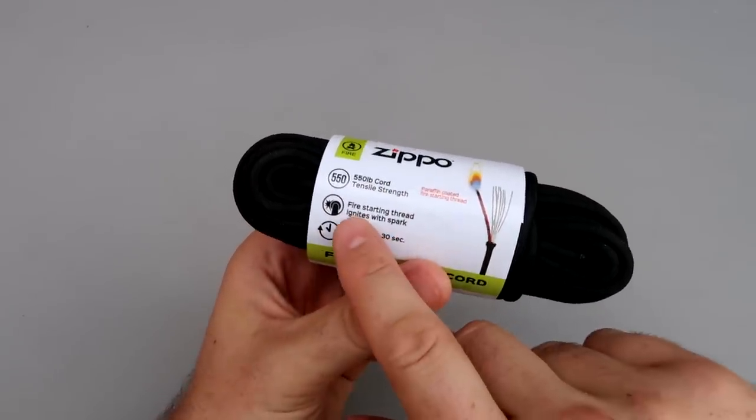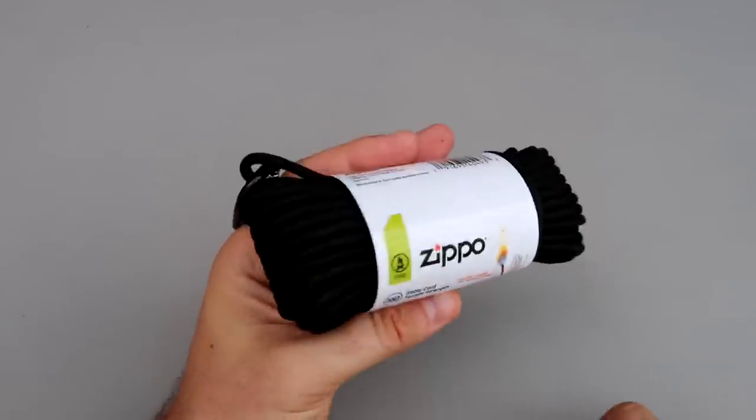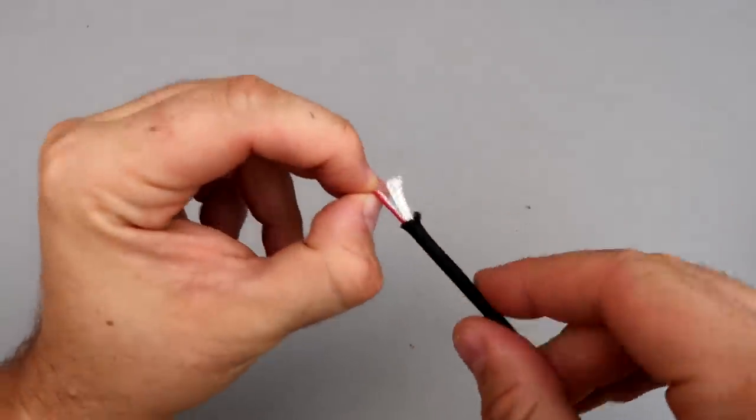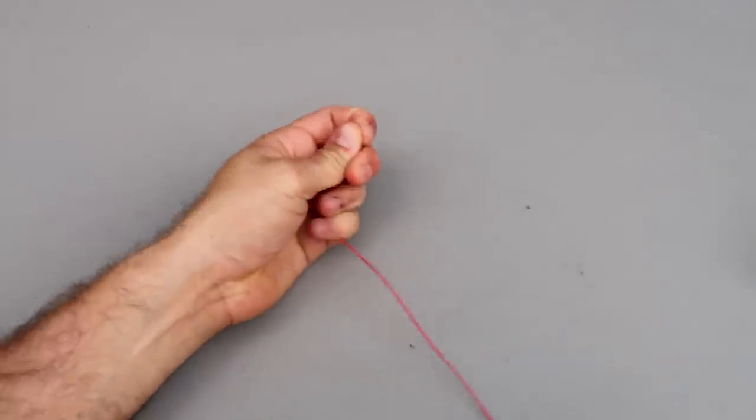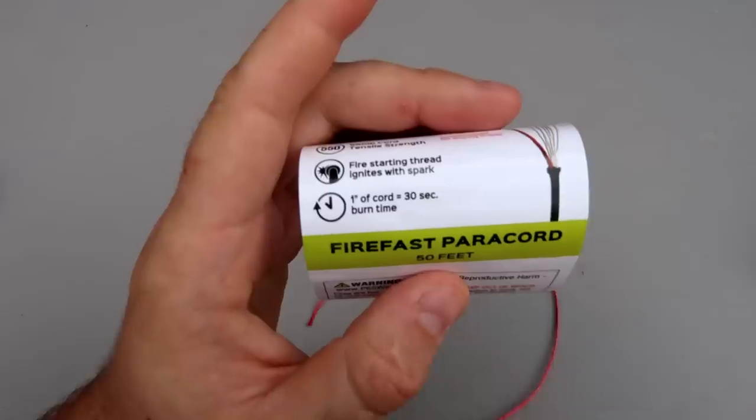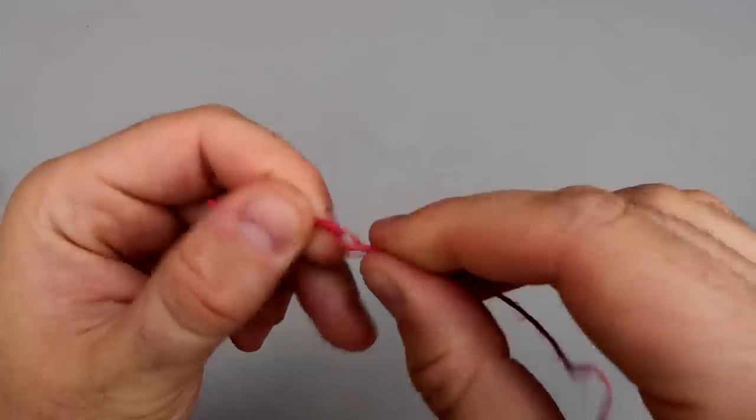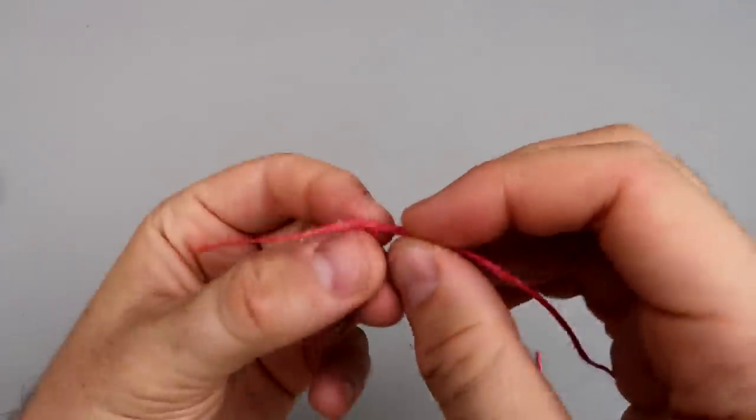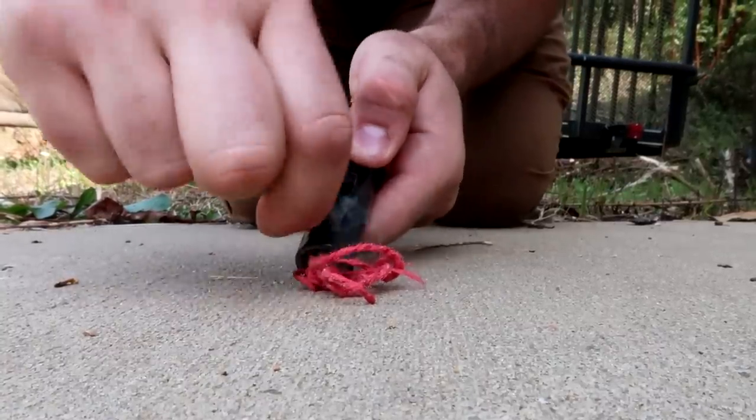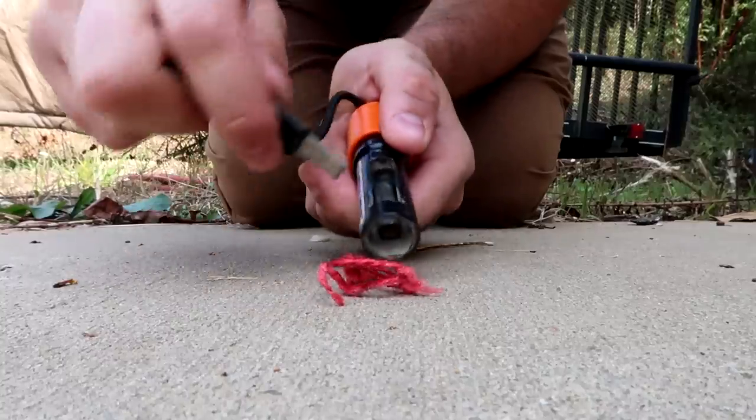It looks like it's a fire starting thread that ignites with a spark. Okay, cut a piece off, and what I'll do is grab it and pull this whole thing out. One inch of cord is 30 seconds burn time, so the more cord you have, the longer it will burn I guess. You're just gonna fluff it up a little bit, then I'm gonna get my striker and give it a spark or two. And there you go. Oh, it kind of lit up.